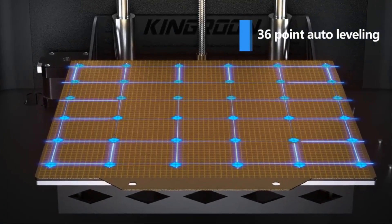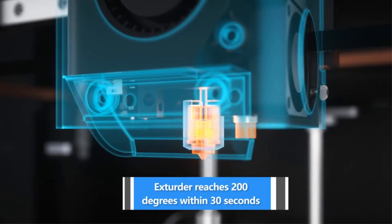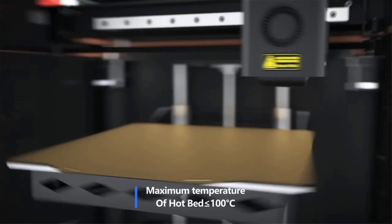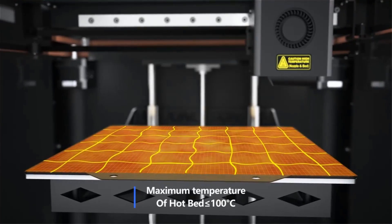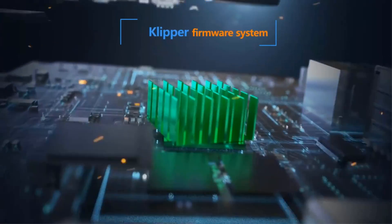Kingroon KLP-1 is a CoreXY 3D printer with linear guides on the X-axis and Y-axis, which makes the printer accurate, fast, and durable during fast movement.